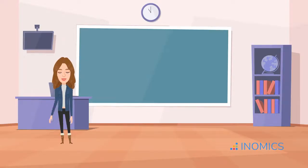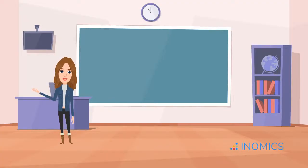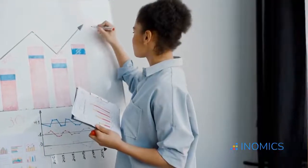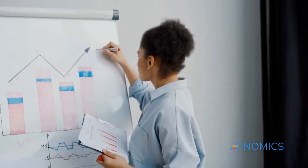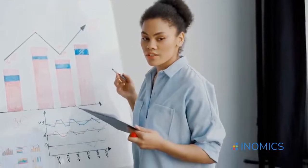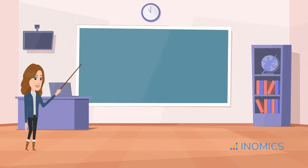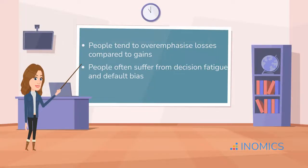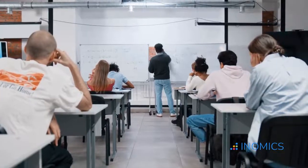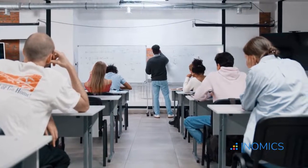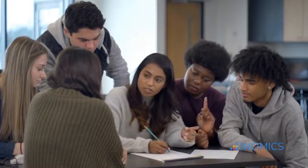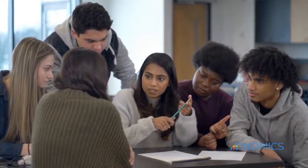Now let's zoom out. What if consumers aren't rational? What if they don't have perfect information, or their preferences change day to day? Enter behavioral economics — a field that brings in insights from psychology to question and refine the assumptions of classical consumer theory. For instance, people tend to overemphasize losses compared to gains, often suffer from decision fatigue and default bias, and rarely have perfect information. These insights don't invalidate classical consumer theory — they extend it, helping us build richer models that explain real-world behavior more accurately.